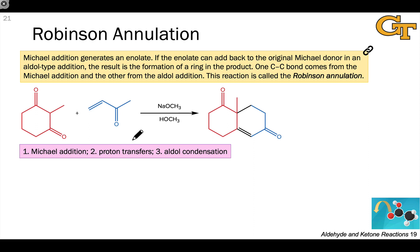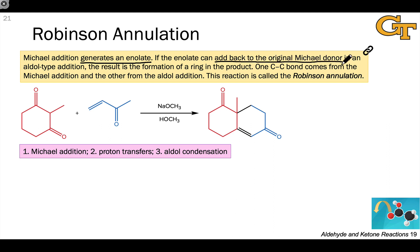In the last video, we very briefly noted that the addition of an enolate to an alpha-beta-unsaturated carbonyl compound actually generates an enolate intermediate itself, since a pair of electrons gets pushed onto the alpha carbon. If this enolate can then add back to the original Michael donor — if the Michael donor has, for example, a ketone group within it — then an aldol-type reaction can occur, and we can form a ring through two carbon-carbon bond forming processes.